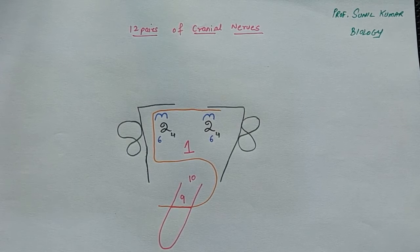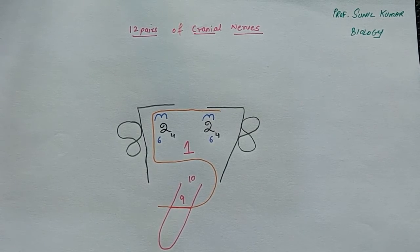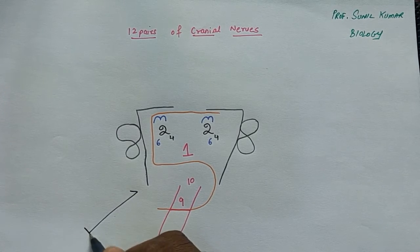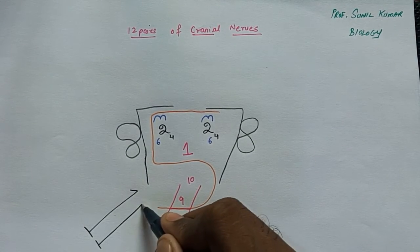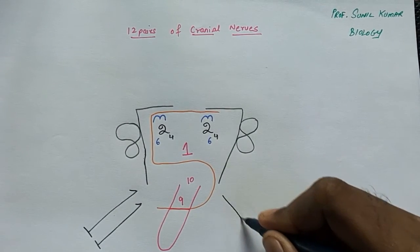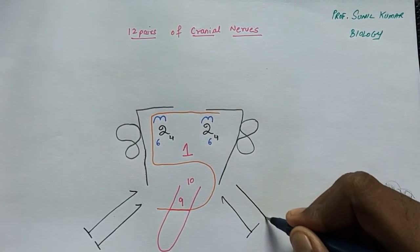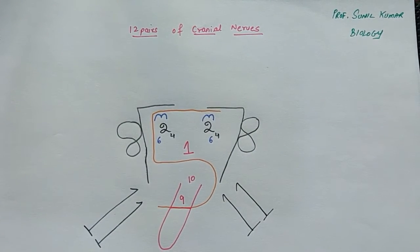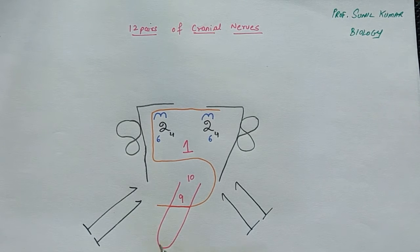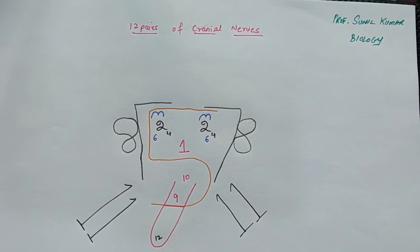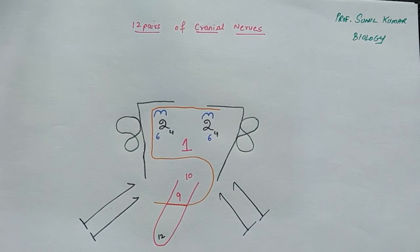Number ten is written just behind number nine. Number eleven is placed like the arms or shoulders of this face. Number twelve is written at the tip of the tongue. When you look at the complete diagram, it appears somewhat like a face — this is the key to remembering the cranial nerves.